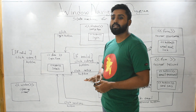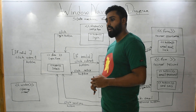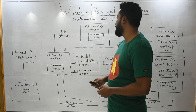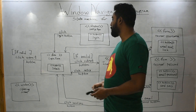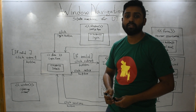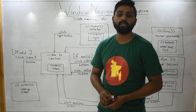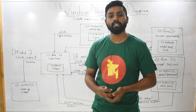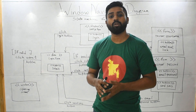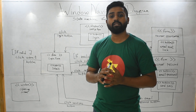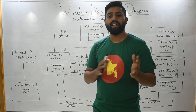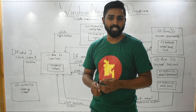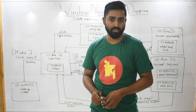The objects in our window navigation diagram are usually your windows, your hyperlinks, and your buttons. We are only interested in those objects which are related to navigation or movement between your pages or forms.